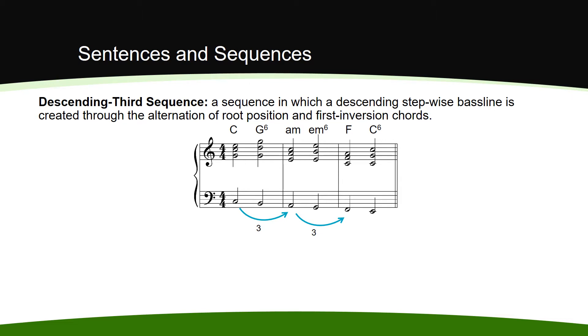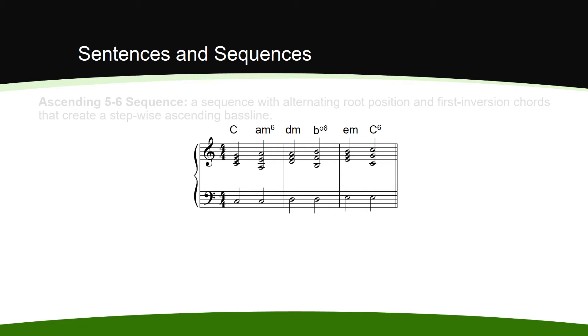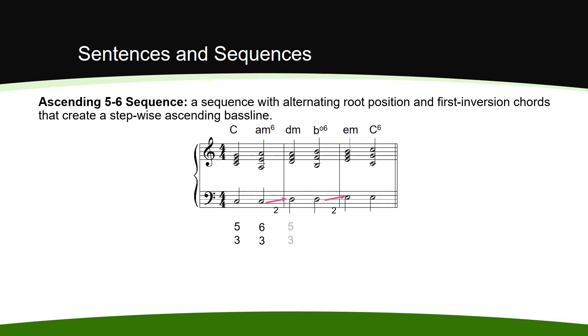The ascending 5-6 sequence also contains alternating root position and first inversion chords, but this time they are used to create a stepwise ascending bass line. The 5-6 label refers to two things: the alternation of root position 5-3 chords and first inversion 6-3 chords, and the upper voice motion from a fifth above the bass to a sixth above the bass.